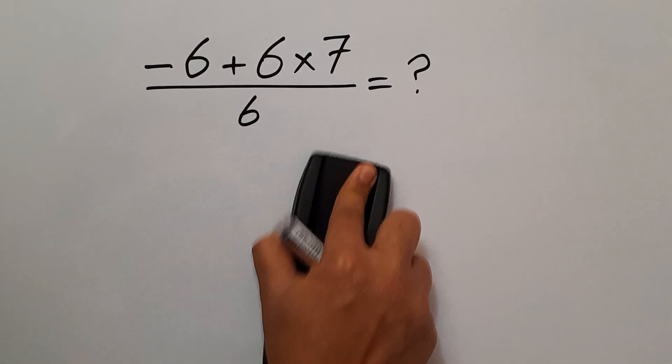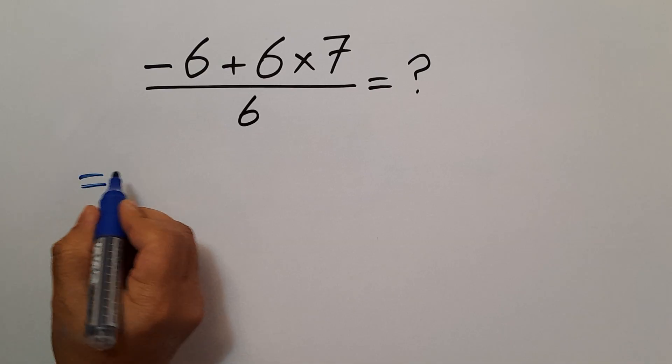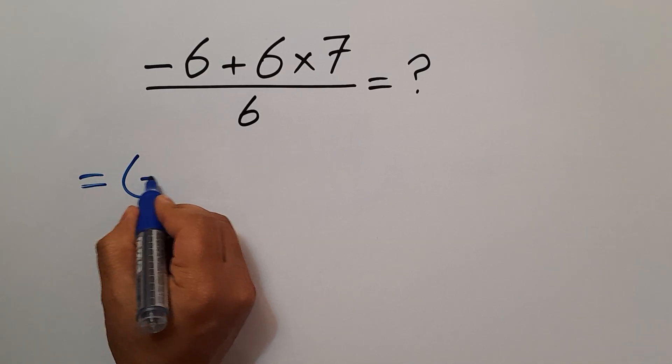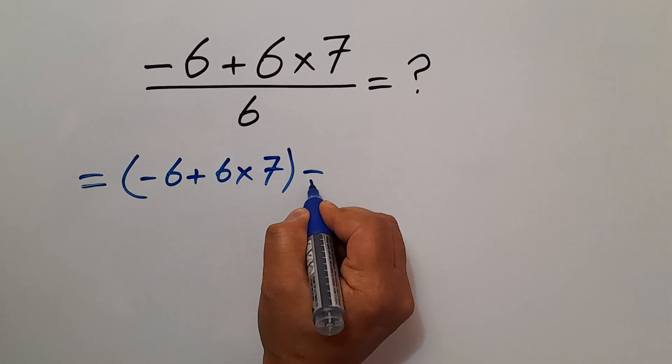Our correct path: our fraction can be written as parentheses, negative 6 plus 6 times 7, divided by 6. The numerator divided by denominator.